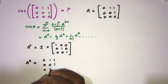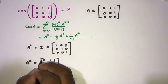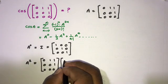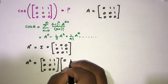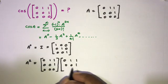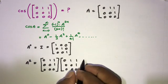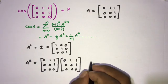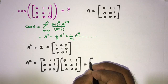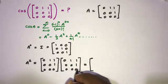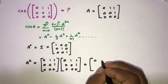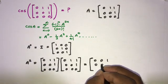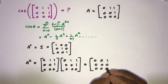A squared equals A times A, so we multiply [0,1,1; 0,0,1; 0,0,0] by itself. Simplifying this product gives us the matrix [0,0,1; 0,0,0; 0,0,0].